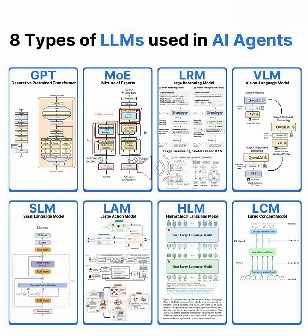VLM, vision language models, bridge the gap between images and text. Models like QwenLM combine visual understanding with language processing. Stage 1 prompts the image, stage 2 handles multitask reasoning, and stage 3 delivers supervised fine-tuning. They're revolutionizing everything from medical imaging to autonomous vehicles.